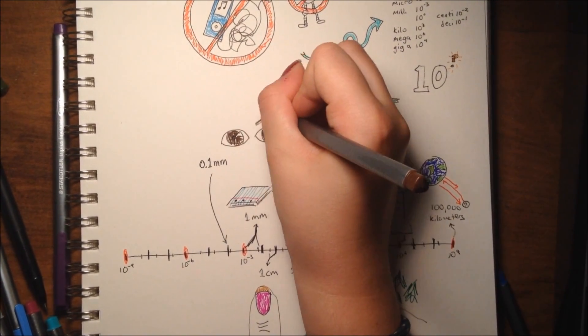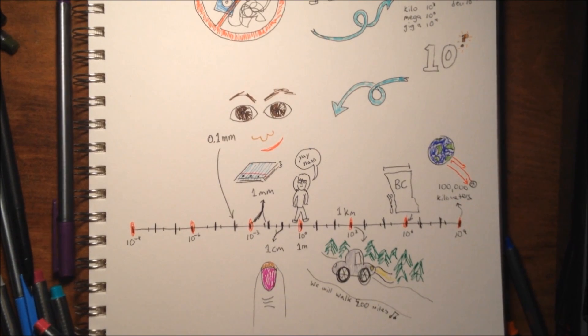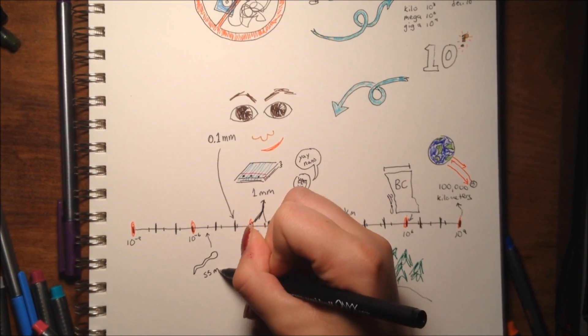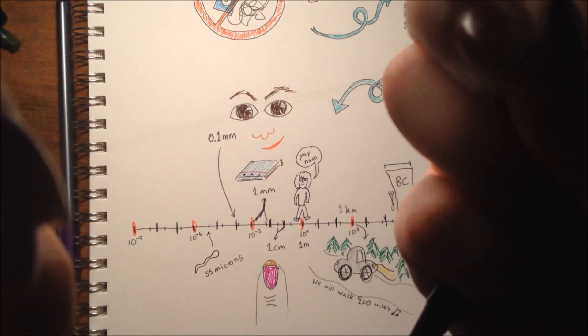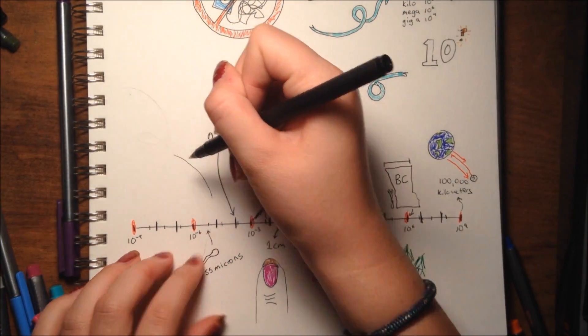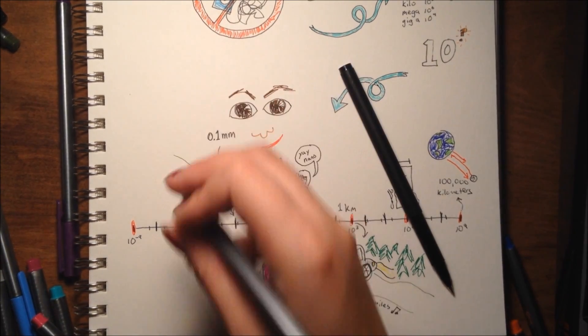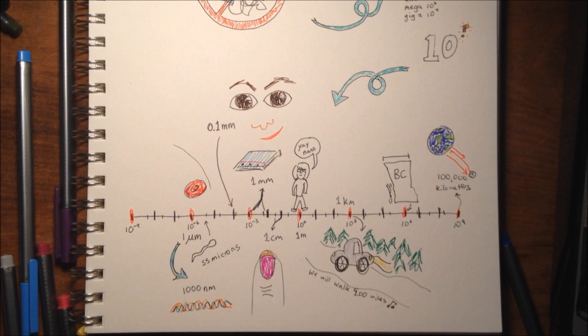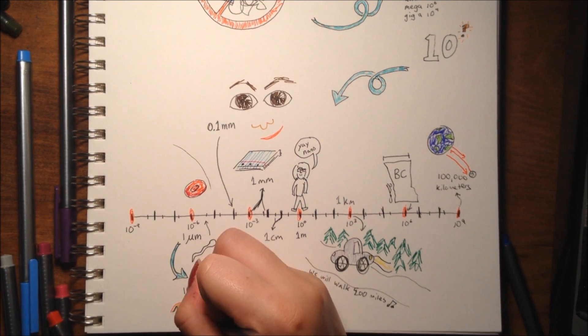If we go down even further, in between 10 to the power of negative 6 and a millimeter, or 10 to the negative 3, there's all sorts of things like sperm and blood cells that we're not really familiar with seeing. Under a micron, or 10 to the negative 6 meters, is where things really start to get cool.